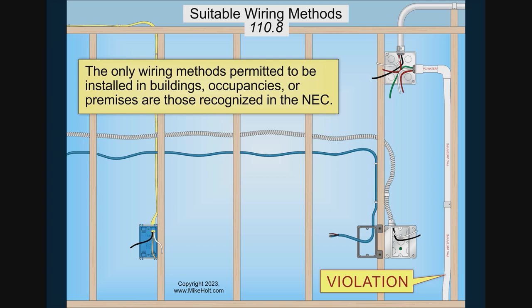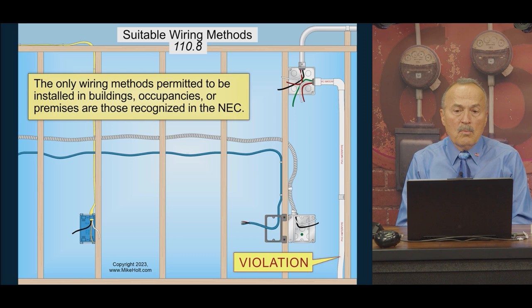Suitable wiring methods, 110.8. The only wiring methods permitted to be installed in buildings, occupancies, or premises are those recognized by the NEC. To make it simple, we need to understand what is a wiring method.